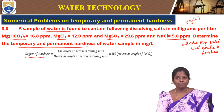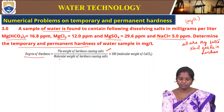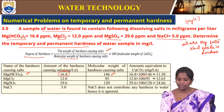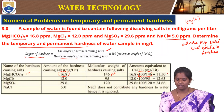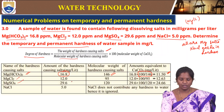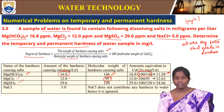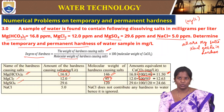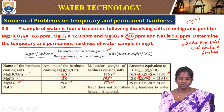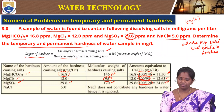Using the same formula: for magnesium bicarbonate 16.8, molecular weight 146 → 16.8 × (100/146) = 11.5 mg/L. For magnesium chloride 12, molecular weight 95 → 12 × (100/95) = 12.63 ppm. For magnesium sulphate 29.6, molecular weight 120 → 29.6 × (100/120) = 24.66 mg/L.